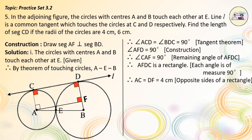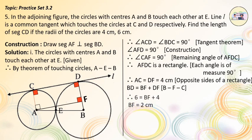Therefore, CD = AF = 4 cm and AC = DF = 4 cm, as they are opposite sides of the rectangle. Now, BD = BF + DF. Since the radius of the bigger circle is 6 cm, BD = 6 cm. Therefore, 6 = BF + 4, so BF = 2 cm.